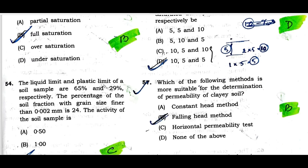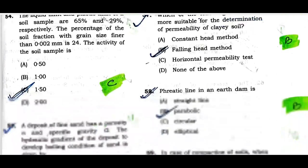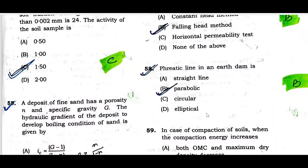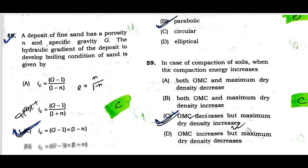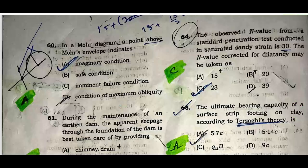Question fifty-seven: Which method is more suitable for the determination of permeability of clay soil? The phreatic line is nothing but a parabola. Question fifty-nine: In case of compaction of soil, when the compaction energy increases, OMC decreases but maximum dry density increases. Option C is correct.